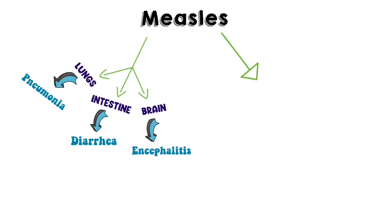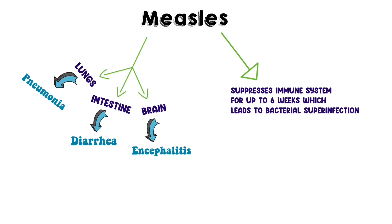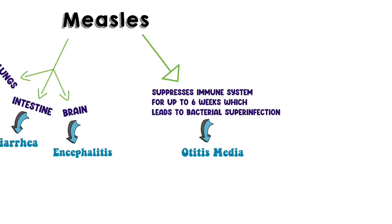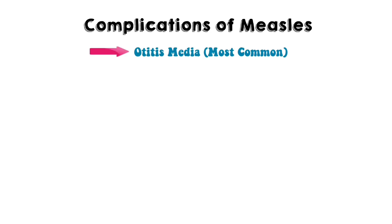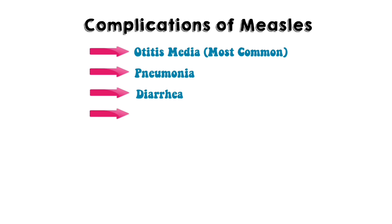Measles also suppresses the immune system for up to six weeks, which leads to bacterial superinfection, which can lead to otitis media. The most common complication of measles is otitis media, followed by pneumonia, diarrhea, and encephalitis — the last three being the major causes of death in measles.